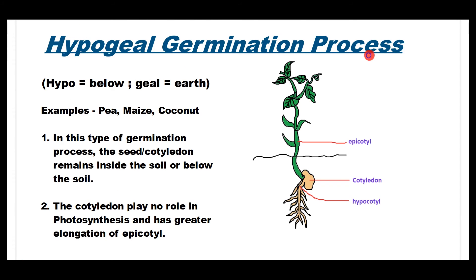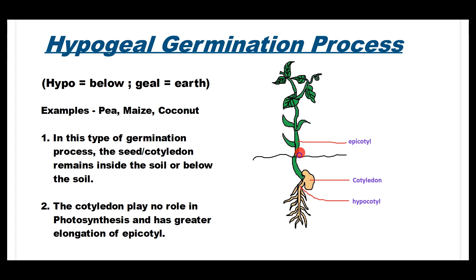Hypogeal germination process — 'hypo' means below, 'geal' means earth. So in this type, the cotyledon remains underground. Examples: pea plant, maize, coconut. In this type of germination, the seed cotyledon remains inside or below the soil. The cotyledon plays no role in photosynthesis and has greater elongation of the epicotyl. In this case, this will be the hypocotyl and the aerial stem will be the epicotyl.